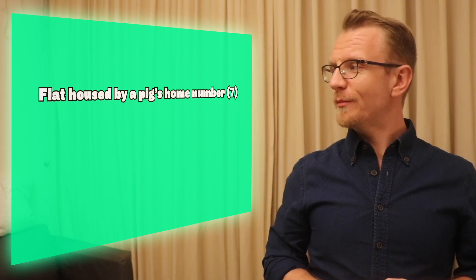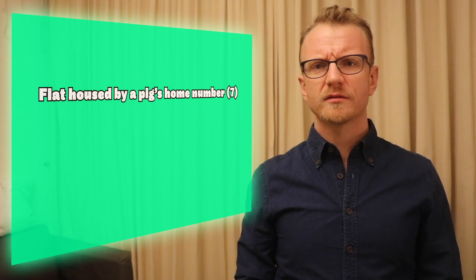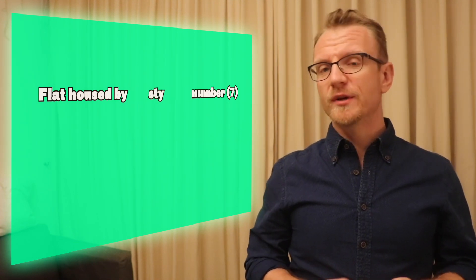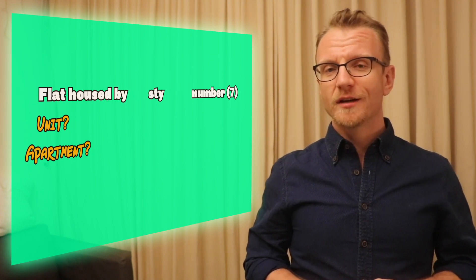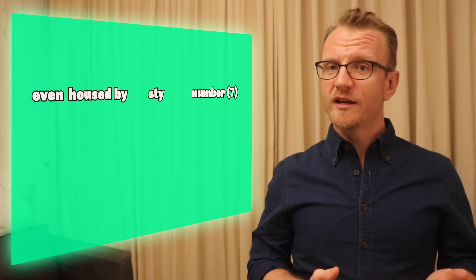Let's try a trickier example: flat housed by a pig's home number. It's gibberish. So a pig's home is a sty, and a flat could be a unit or an apartment, but it could also be the opposite of bumpy, meaning even. So if you put even inside sty, you get a number - seventy.